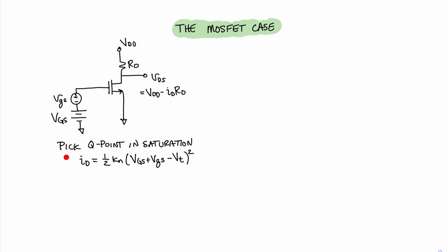From the previous video, looking at our voltage transfer characteristic curve, it's important that we pick a Q point in the saturation mode, in which case we know that the current ID is one half KN·VOV squared. I've expanded the value of VOV squared to show our DC offset VGS and our small signal little VGS. Our goal is to look at this equation and understand the conditions for fairly linear operation when using a transistor as an amplifier.